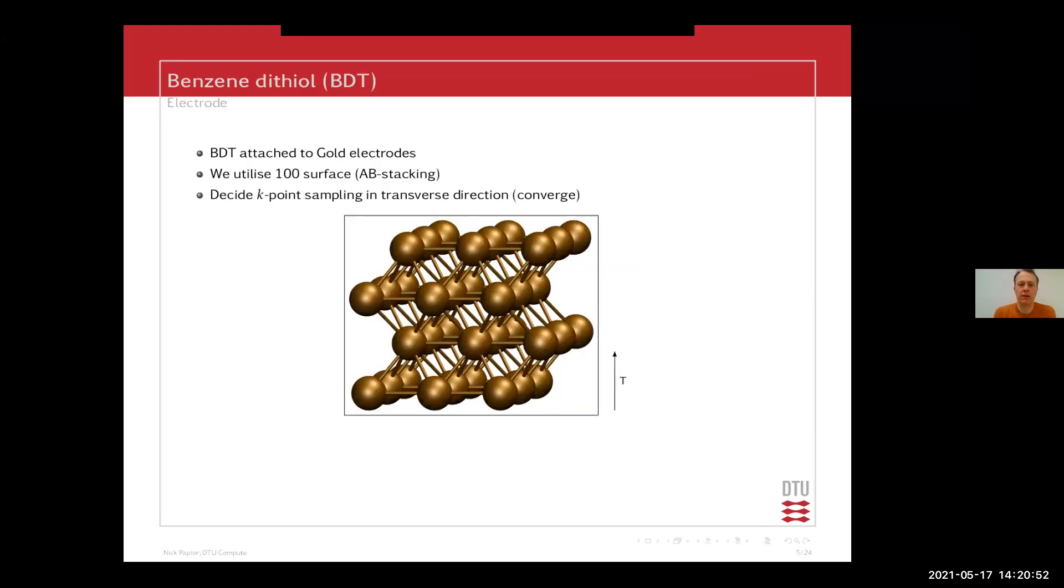So in this benzene dithiol example, we'll be using an AB stacking gold surface electrode. In this case, it's the 100 where you have this AB stacking. And there you can see that you have four layers in this case. Two layers would be too short because you would have more than nearest neighbor cell interactions. And therefore you need four layers, whether you only need three or you actually need the four, that depends on the basis set range. But generally, you would always need at least three, I would say.